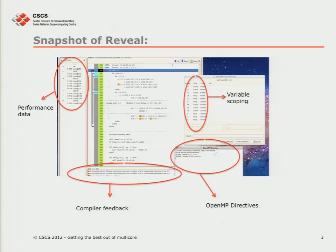But best of all, Reveal can give you the directive — you just click on it and it inserts the directive for you: OMP parallel do, first private, last private, shared. So this looks pretty neat. This could be a painless way if you don't know any OpenMP or know very little. You have a big fat code you don't know what to do with — it can be a very nice guide to get you started.